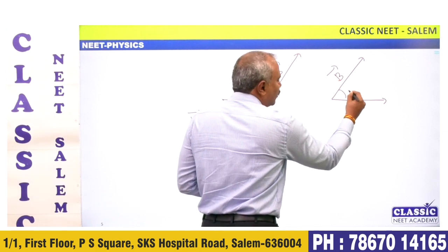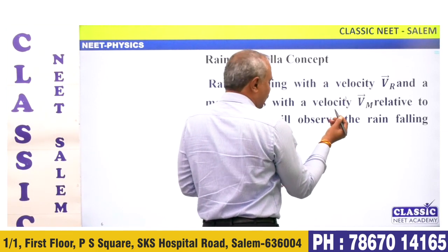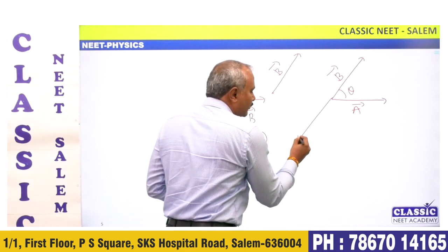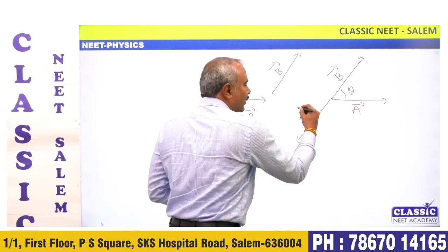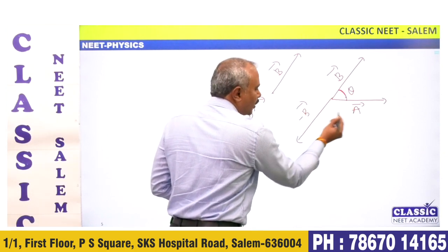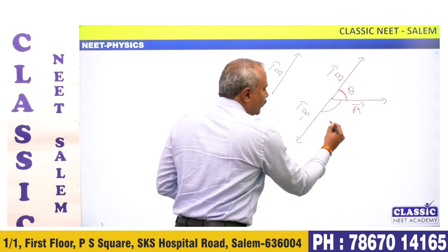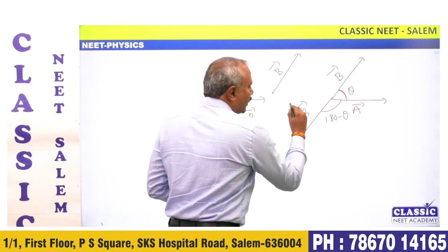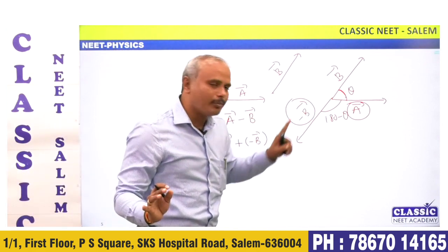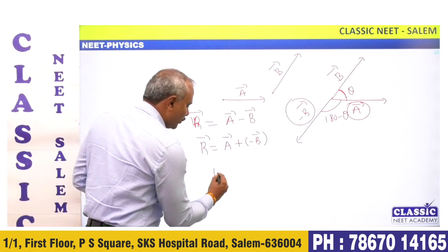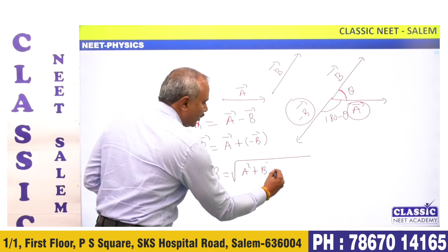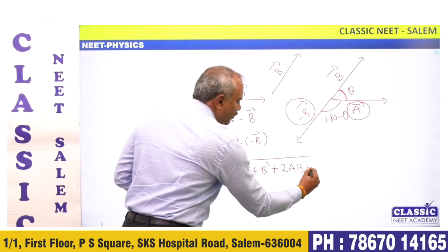So minus B vector: if B vector is at angle theta, then minus B vector is at 180 minus theta. We now add vector A and minus B vector. The resultant equals root of A squared plus B squared plus 2AB cos(180 minus theta).